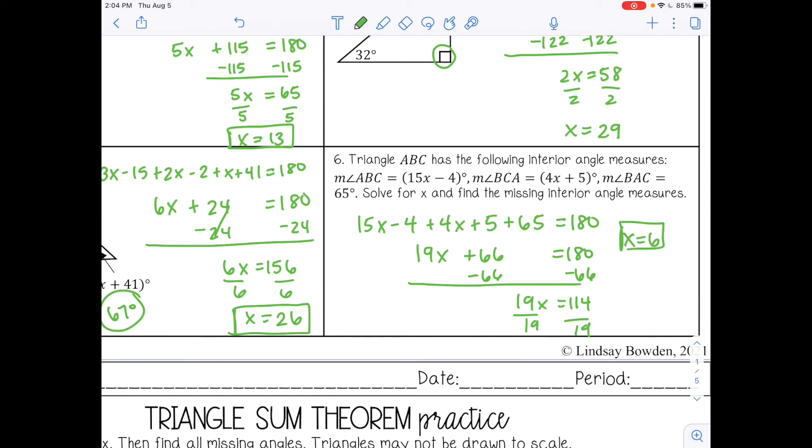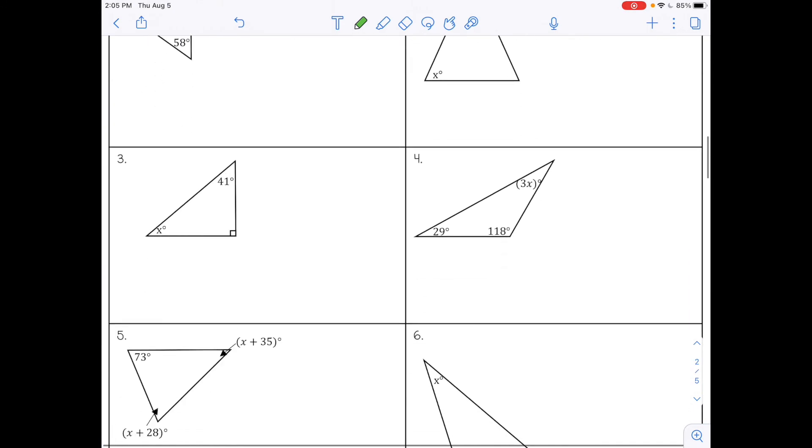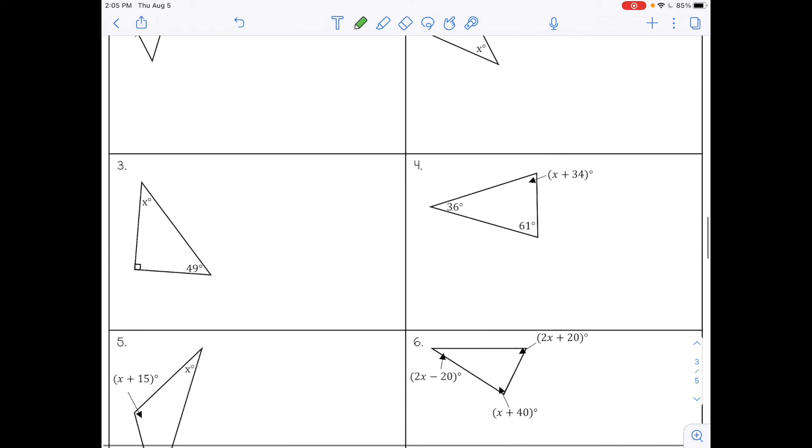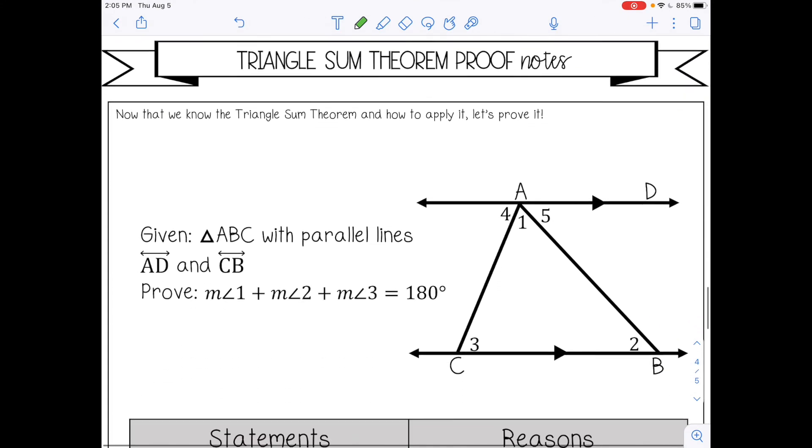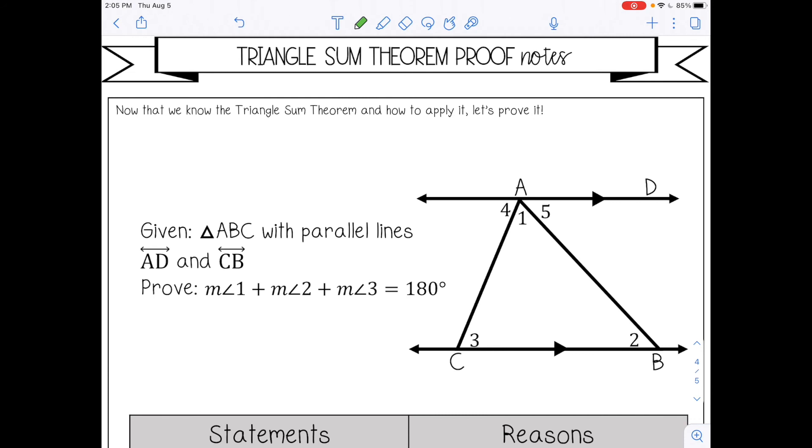And then I also need to substitute back in to those two angles that have expressions so I can find what their actual degree measure is. So this first one, 15 times 6 minus 4, that would give me 86 degrees. I'm just going to write it on top here. And then 4 times 6 plus 5, that would be 29 degrees. You can pause the video now and complete your two practices and check with your teacher. And then unpause the video to go over the proof.